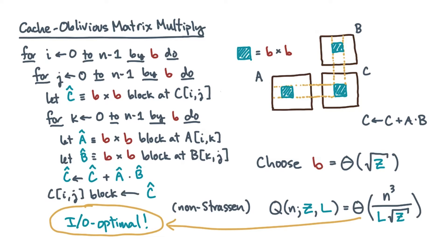Since b is a function of the cache size and it appears in the algorithm, we say this algorithm is cache aware.